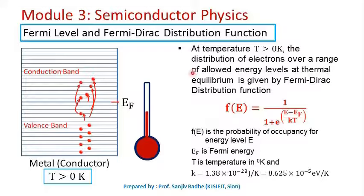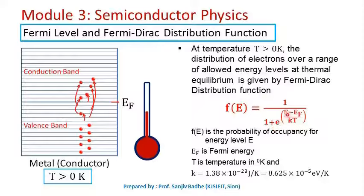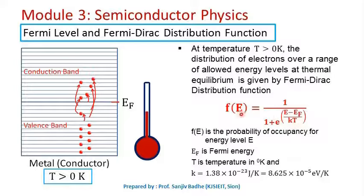To calculate the probability of occupancy for a given energy level, Fermi and Dirac formulated the Fermi-Dirac distribution function: F(E) = 1 / (1 + e^((E − EF) / KT)), where F(E) is the probability of occupancy for energy level E, EF is the Fermi energy, K is the Boltzmann constant, and T is the temperature at which the probability is being calculated.